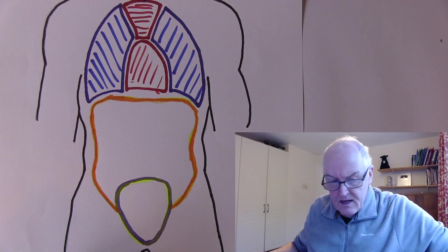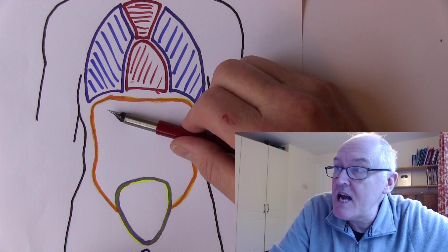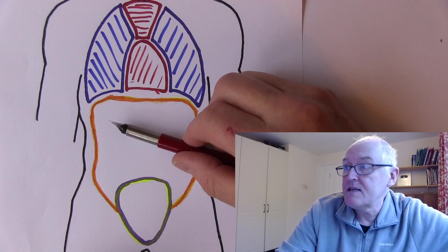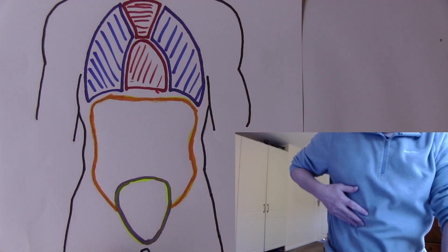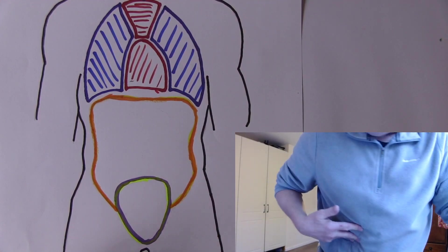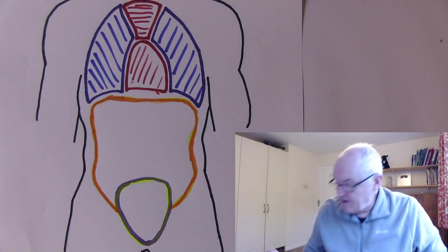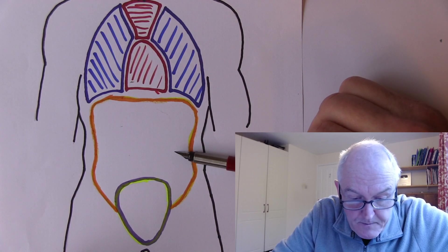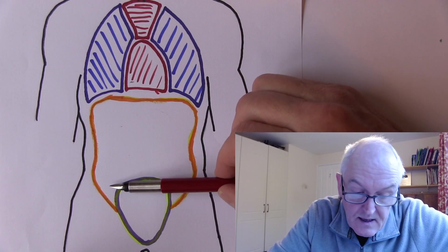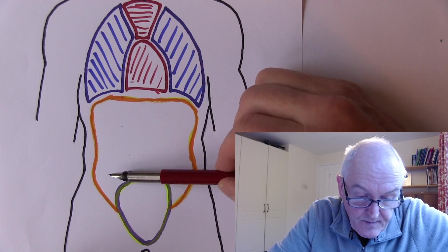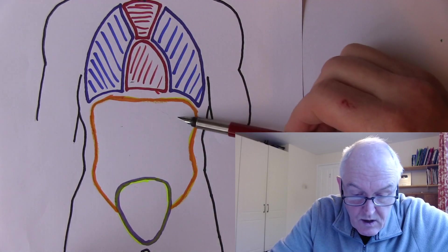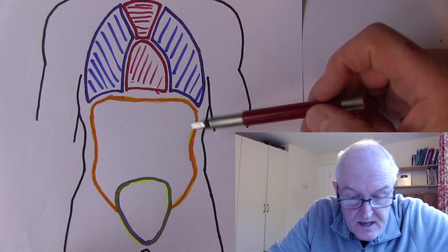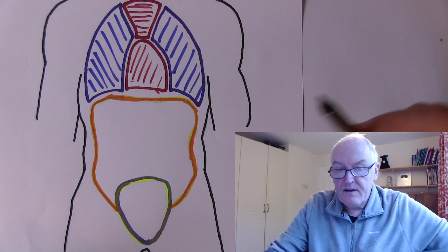Moving down to the abdominal cavity: in the top right we have the liver, just underneath the right costal margin. Underneath the left costal margin we have the spleen. The kidneys are at the back. The colon runs as the ascending colon, transverse colon, descending colon, then through the sigmoid colon to the rectum.